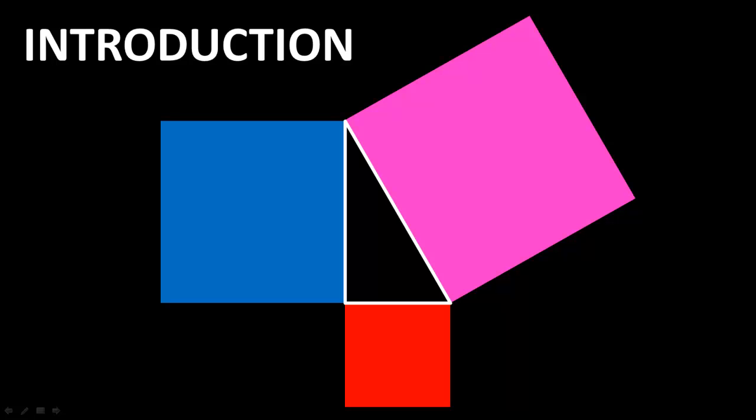In plain English, Euclid says that if we construct a square on each side of a right triangle, then the two smaller squares always add up to the area of the bigger square. In this case, the area of the red square plus the area of the blue square equals the area of the pink square.